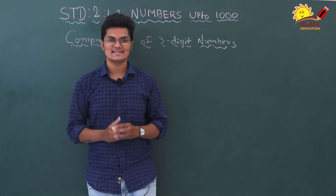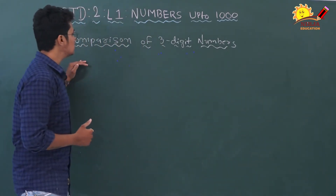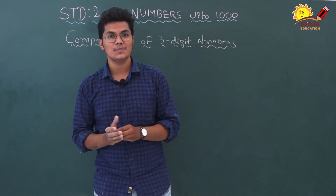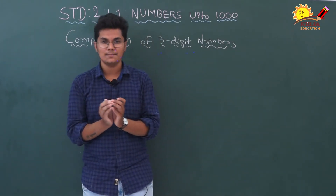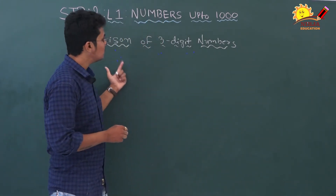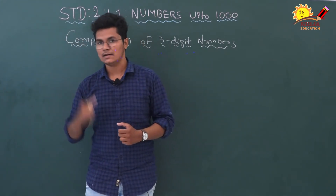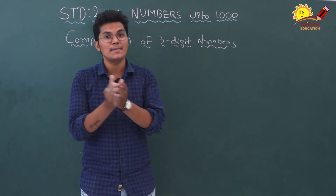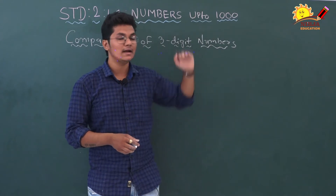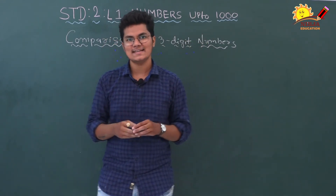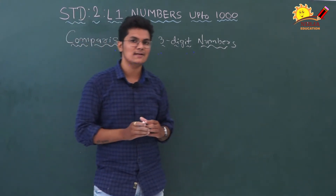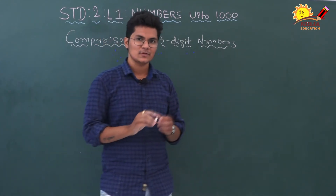Now, dear children, let's learn about our second topic, which is comparison of three-digit numbers. Ab, comparison ka matlab kya hua? Comparison matlab, do cheezon ko compare karna — matlab ki find out karna ki do cheez mein farak kya hai. Numbers ke baare mein, hum yeh compare karenge ki kaunsa number bada hai, kaunsa number chhota hai. For example, aapke ghar mein aapka chhota bhai hoga, to aap compare karte honge, like ki aapka bhai aapse tall hai ya short hai. Hum normally aisi comparison karte hain ghar pe. To, hum three-digit numbers mein aisi hi compare karenge, yeh dhundh nikalne ke liye ki kaunsa number bada hai or kaunsa number chhota hai. To, chaliye shuru karte hain.